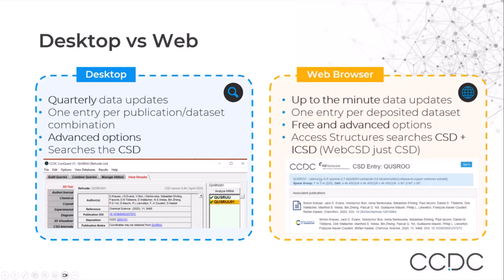The web browser instead has up to the minute data updates. It has one entry per deposited dataset and has both free options and advanced search options. The free version access structures allows you to search the CSD and the ICSD, while the licensed version web CSD allows you to search the CSD. This does not need an installation.